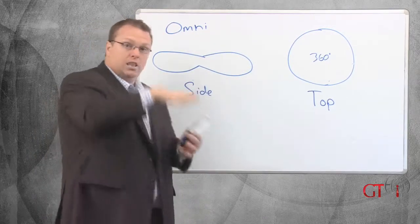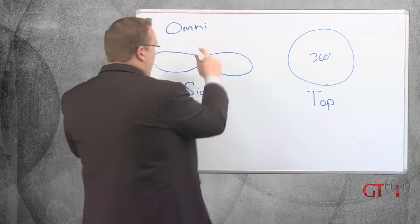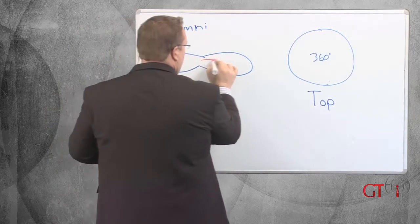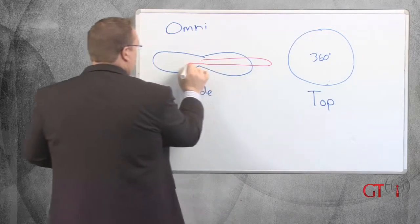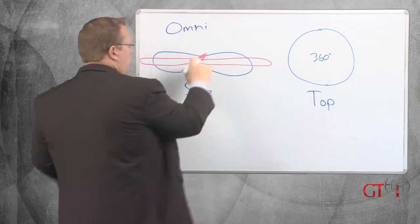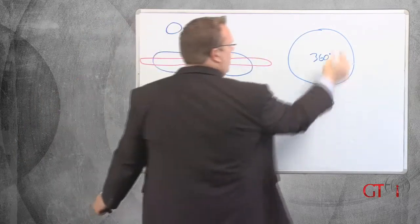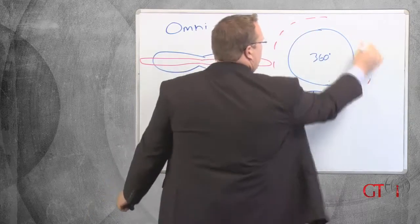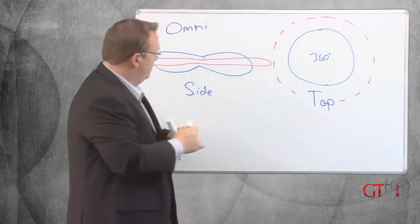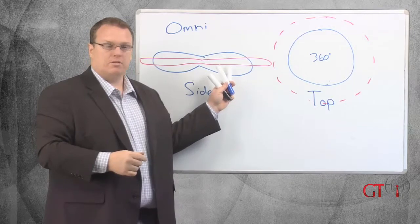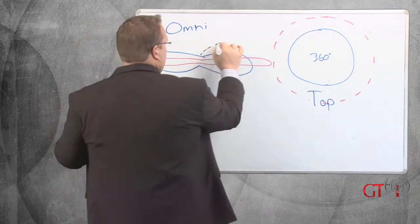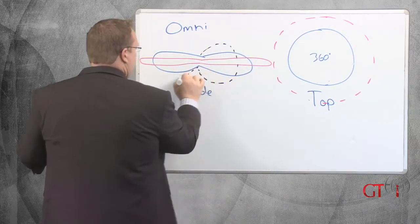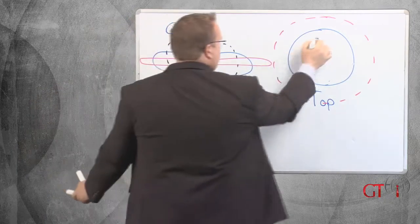So an omnidirectional from the side may look like this. So it's taken that ball of dough and it's squished it. A higher gain omnidirectional antenna may do something like this. We've squished the dough even more. We're sending more signal out this way, giving us a bigger circle, bigger coverage area. But what's the downside of doing this? We could actually go to even show maybe something like this. This is a lower gain omnidirectional antenna.